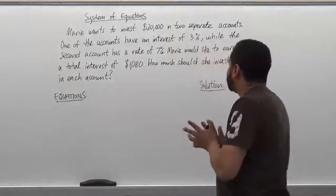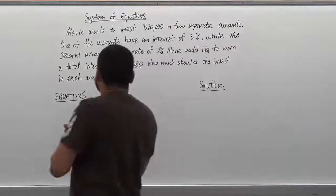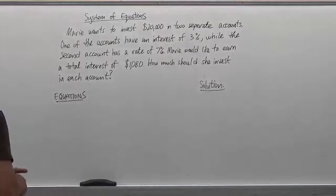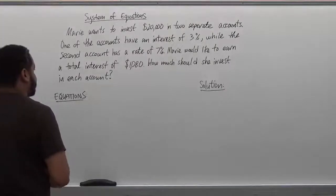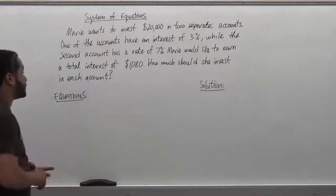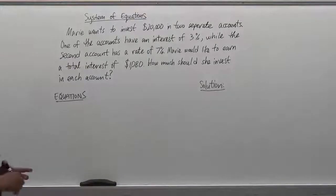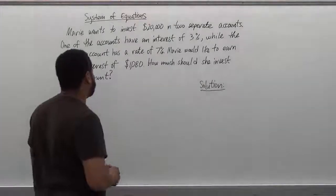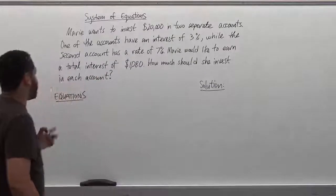So here we have our problem. Marie wants to invest $20,000 in two separate accounts. One of the accounts has an interest of 3% while the second account has a rate of 7%. Marie would like to earn a total interest of $1,080. How much should she invest in each account?